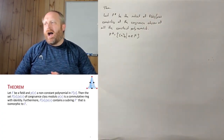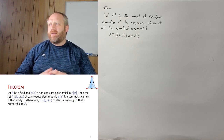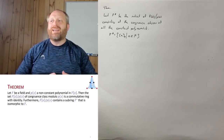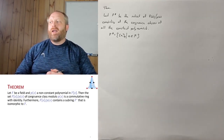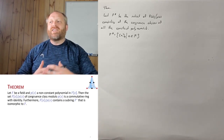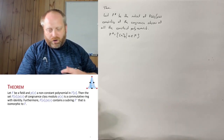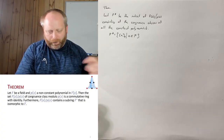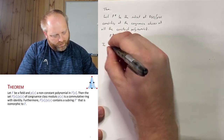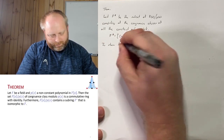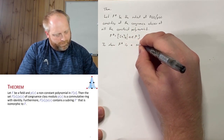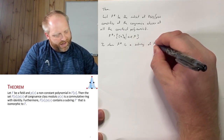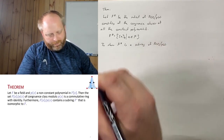The whole theorem is: if f is a field and p(x) is a non-constant polynomial in f adjoint x, then f adjoint x mod p is a commutative ring with identity. We also need to show that f adjoint x mod p contains a sub-ring f* isomorphic to f. There are two parts to show. The first thing we're going to show is that f* is a sub-ring of f adjoint x mod p.